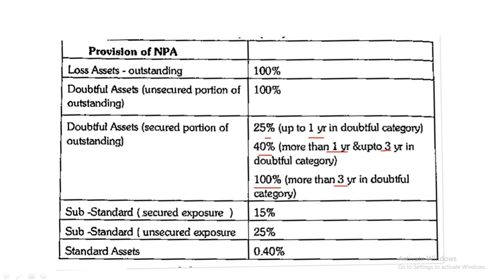For substandard assets: secured loan is 15% provision; unsecured exposure is 25%. For standard assets, which are normal loans in rotation, the provision is 0.40%. So to summarize: loss-making 100%, doubtful up to one year 25%, above one year up to three years 40%, more than three years 100%, substandard secured 15%, unsecured 25%, standard 0.40%.